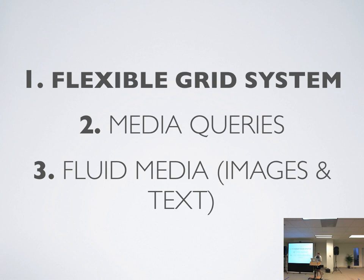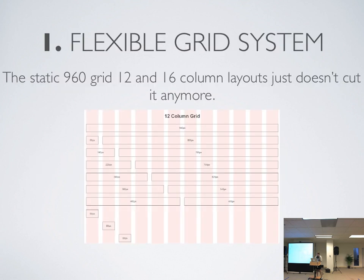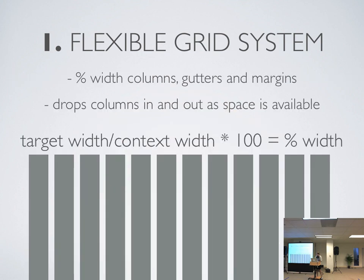So let's talk about the flexible grid system first. We all know the traditional 960 grid, 12 or 16 column layouts. But the problem is that it's 960 pixels. How does that translate to a tablet device with a 480 pixel portrait or 768 landscape? Each column is 60 pixels wide, so it just doesn't scale. We need to move to something way more flexible and fluid — percent width columns, percent width gutters, percent width margins, and we need to drop columns in and out as space becomes available.